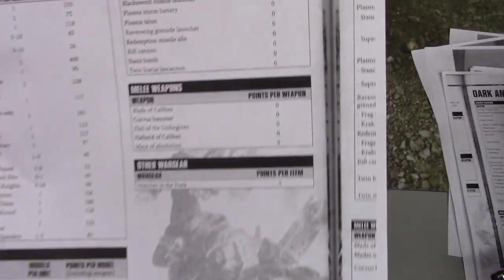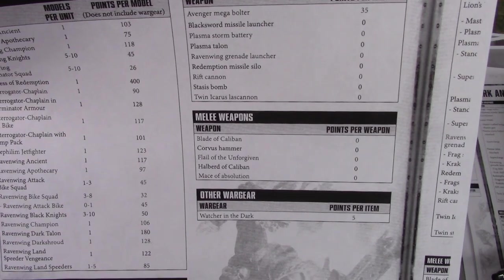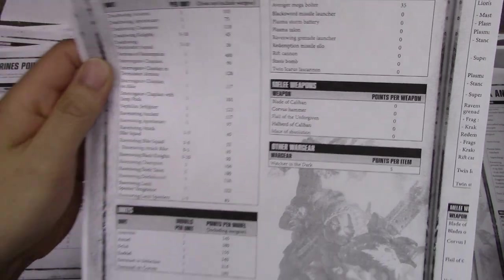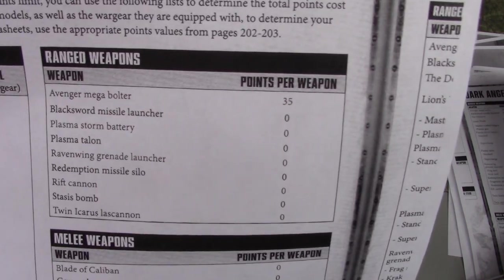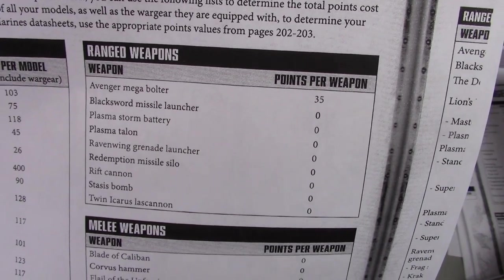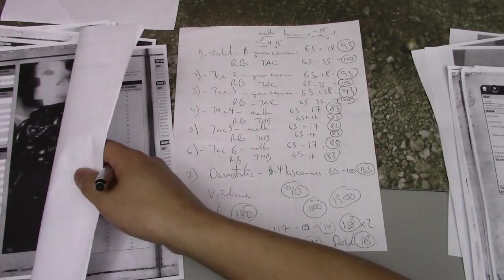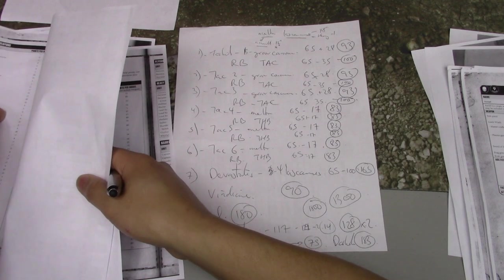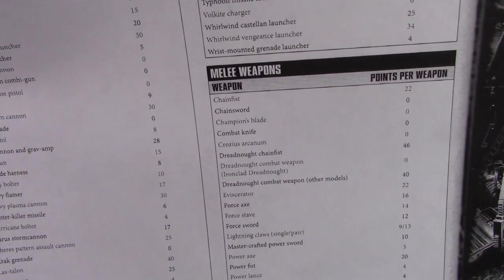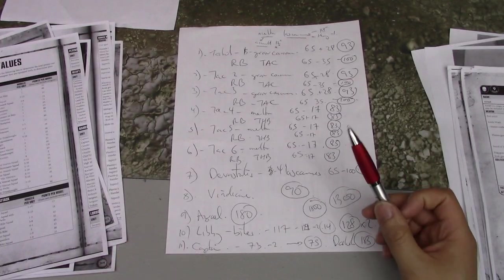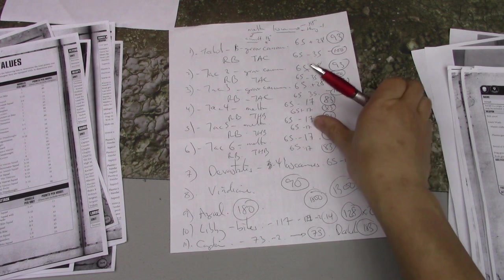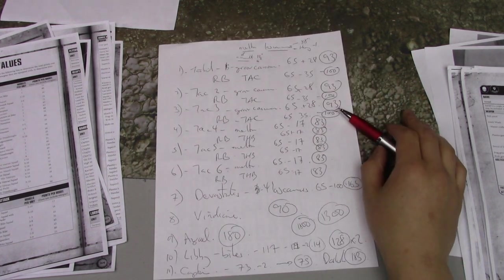It can jink, like all Ravenwing stuff, so it gets a 5+ invulnerable if it advances. And then there's the Stasis Bomb - one use only, chaff killer. Any unit that you fly over, you roll a D6 for every model in that unit up to 10 dice. And on a 4+, the unit suffers a mortal wound. That's awesome. So if you roll 10 dice, say you run over a bunch of Hormagaunts, on average you get 5. That's 5 mortal wounds straight up just for moving. That's pretty good.